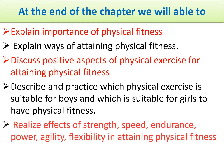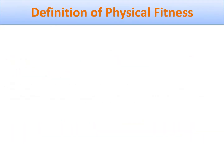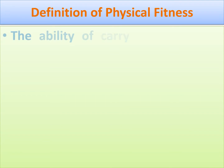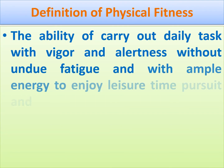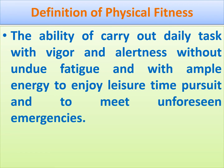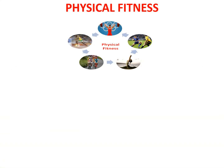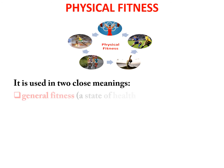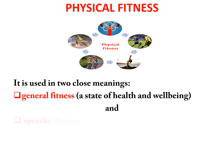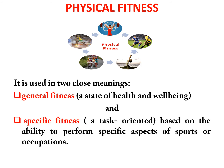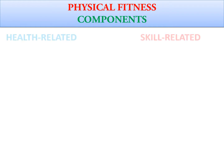The real-life effects of strength, speed, endurance, power, agility, and flexibility in attaining fitness will also be covered. The definition of physical fitness is: the ability to carry out daily tasks with vigor and alertness, without undue fatigue, and with ample energy to enjoy leisure time and to meet unforeseen emergencies. Physical fitness has five components but is used in two close meanings: one is general fitness — a state of health and wellness — and another is specific fitness — a task-oriented ability to perform specific aspects of sports or occupations.